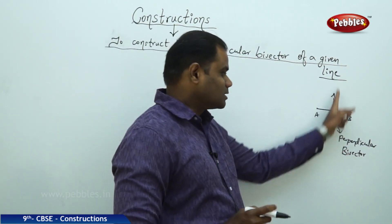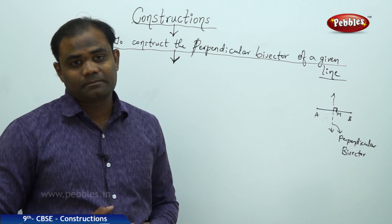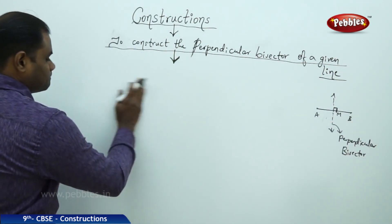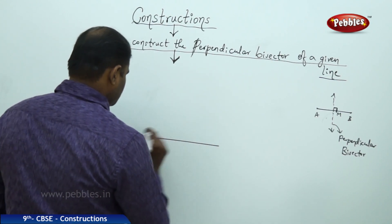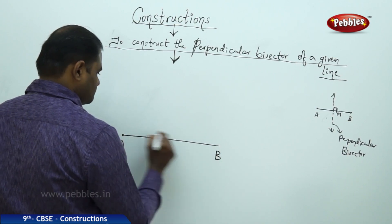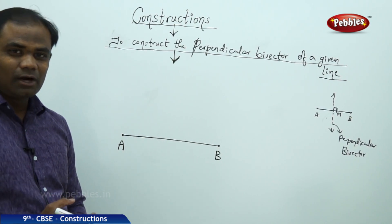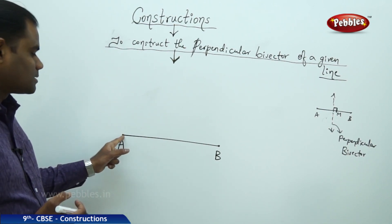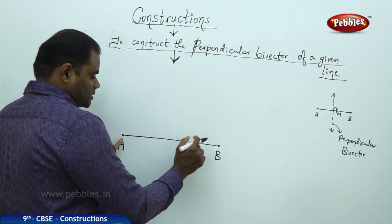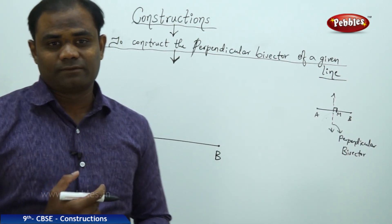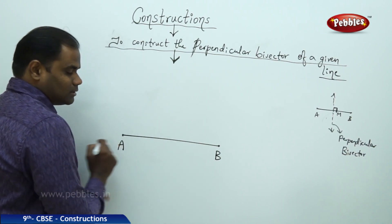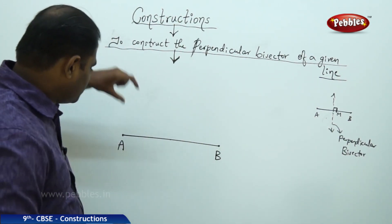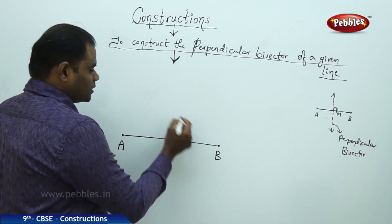Let's see how perfectly we can draw this kind of a line for any given line AB. I have a line AB with its endpoints A and B. The first step in constructing the perpendicular bisector is to take the compass at pointer A, fix the radius, and ensure the radius is more than half of AB. I cannot take a radius less than half. I always take something approximately more than half.